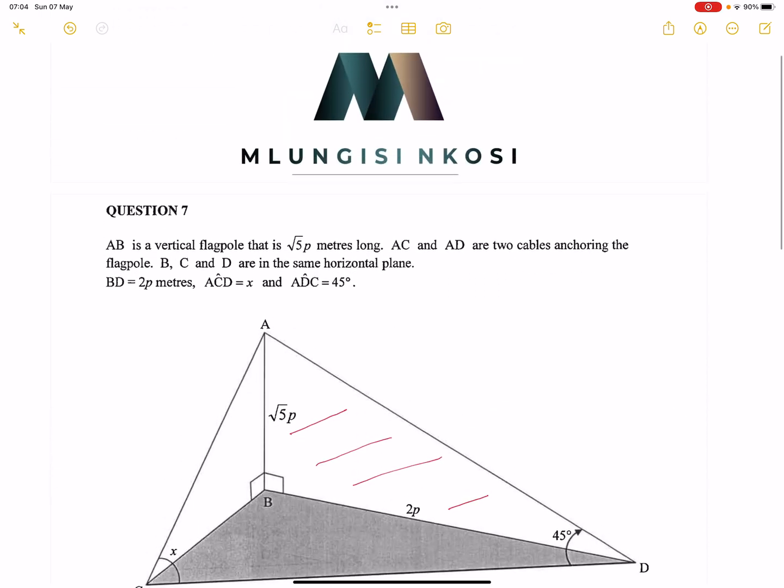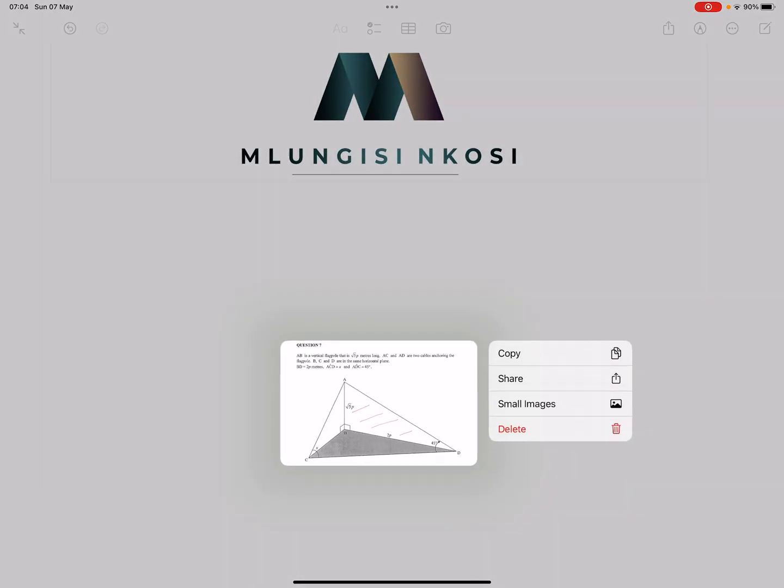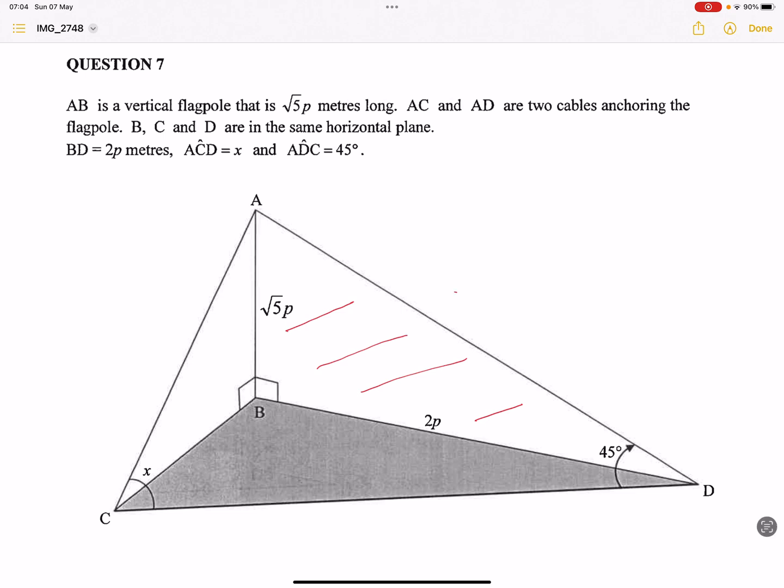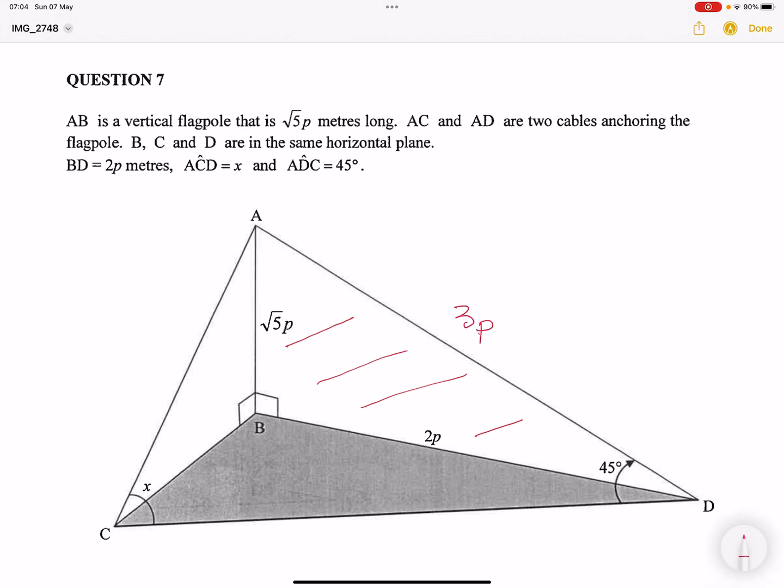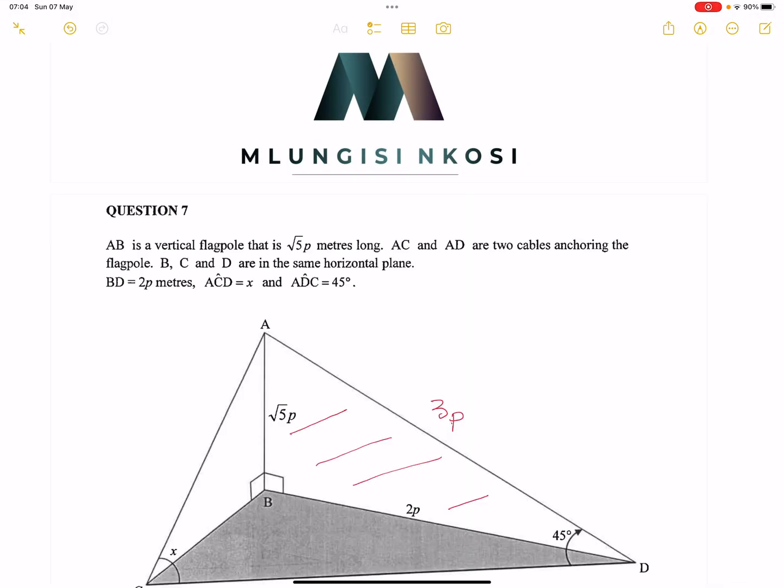So we know now that AD is actually 3P long. So I'm going to just put it there. So that's going to be 3P long, 3P meters, that is, long. Now let's go on to the next question.